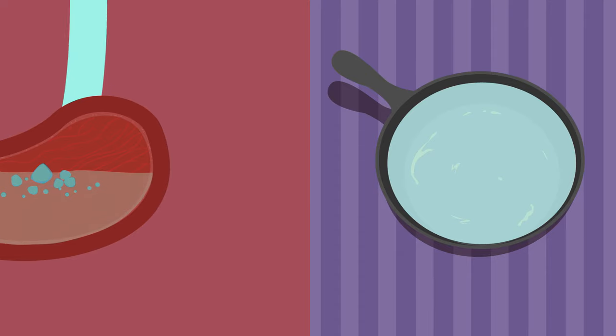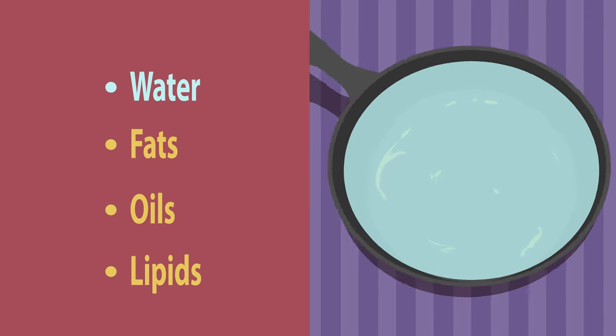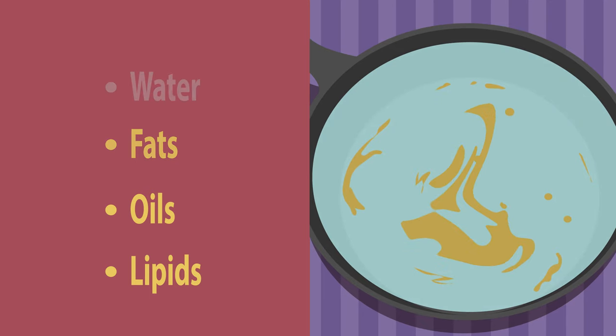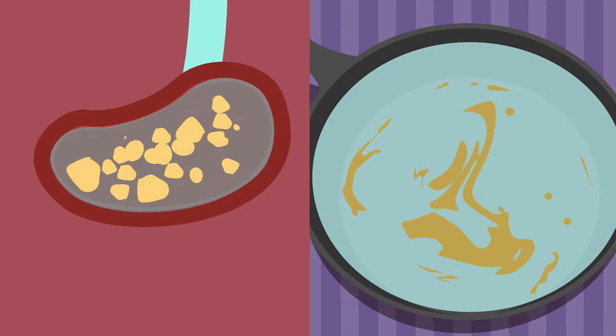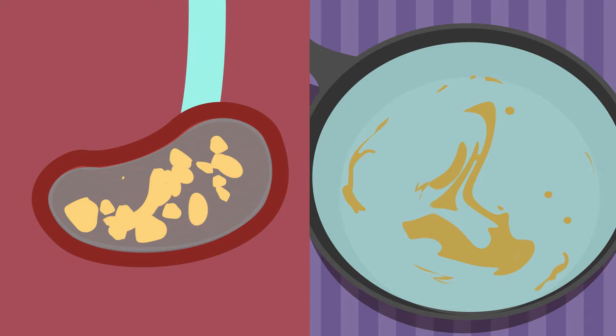If you've ever added water to a greasy pan after cooking, you'll know that water and fats and oils, or lipids, don't mix too well. You end up with oily droplets. Pretty much the same thing happens in our stomach. Our watery mixture of chyme contains big globules of fats and oils which won't be mixed into the solution.